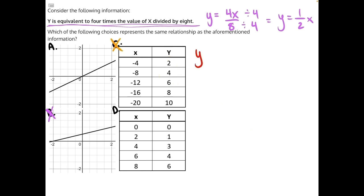For answer choice D, we'll have y equals 1 half x. Let's plug in these values. So we'll have 1 half times 0, 1 half times 2, 1 half times 4, and so on.